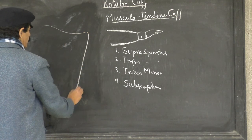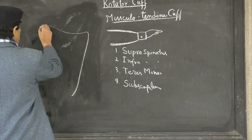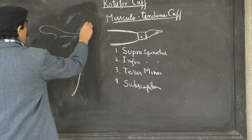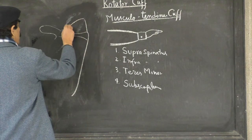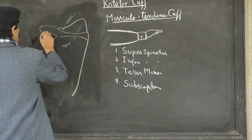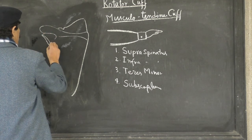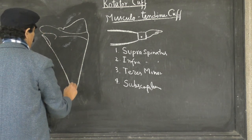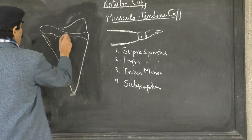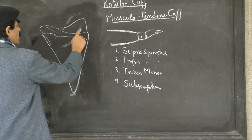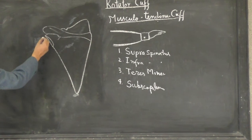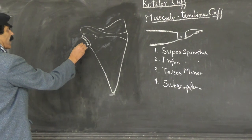Looking at the scapula: the medial border, the spine of the scapula, the superior angle, the superior border, and the supraspinatus notch are visible. There is also the glenoid cavity, the lateral border of the scapula, and the inferior angle. Above the spine of the scapula is the supraspinatus fossa, and below it is the infraspinatus fossa. The head of the humerus articulates at the shoulder joint.